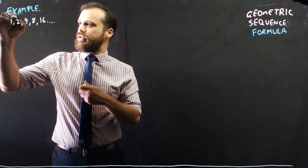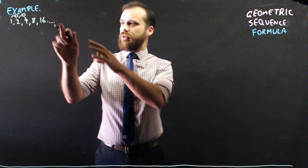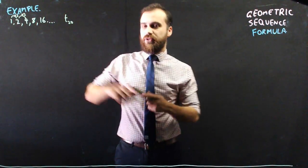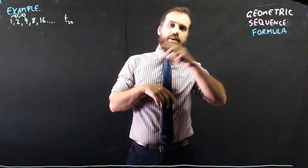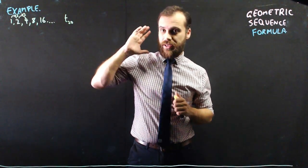Now, the common ratio here is 2, and the recursive definition is fine, but if I want to find out what, say, term 20 is, I don't want to have to find term 1, 2, 3, 4, 5, all the way up to 19, and then find term 20. It would be great if I could just get to term 20 immediately.